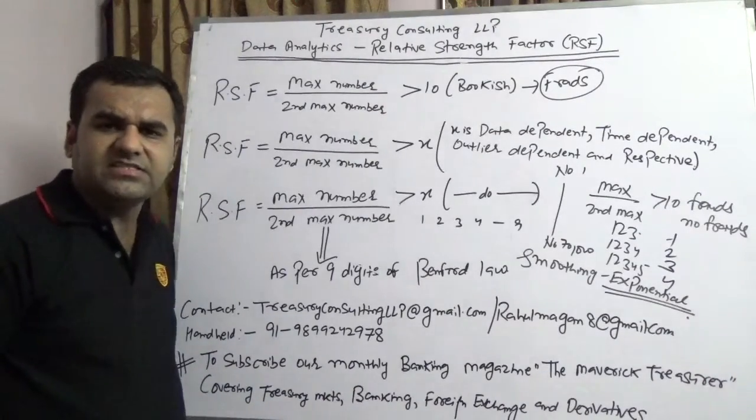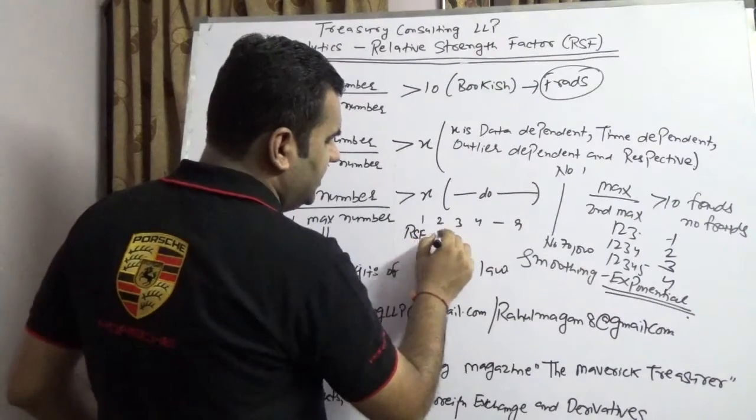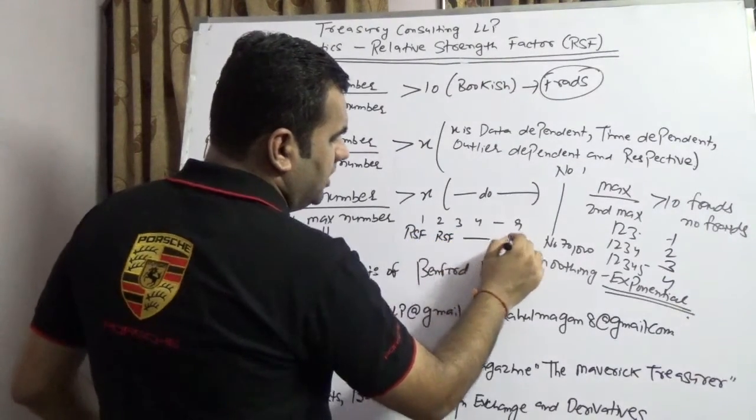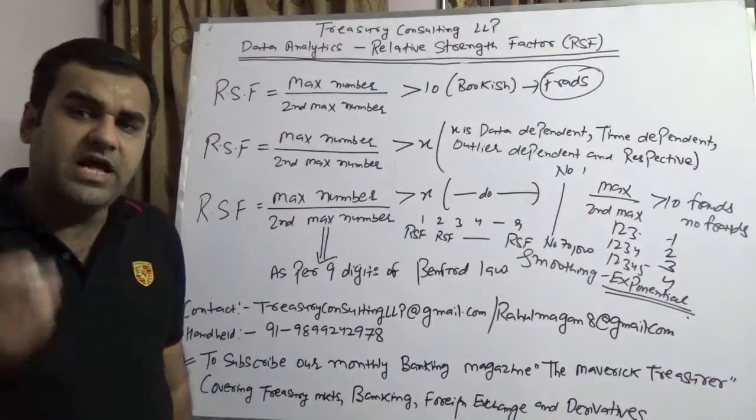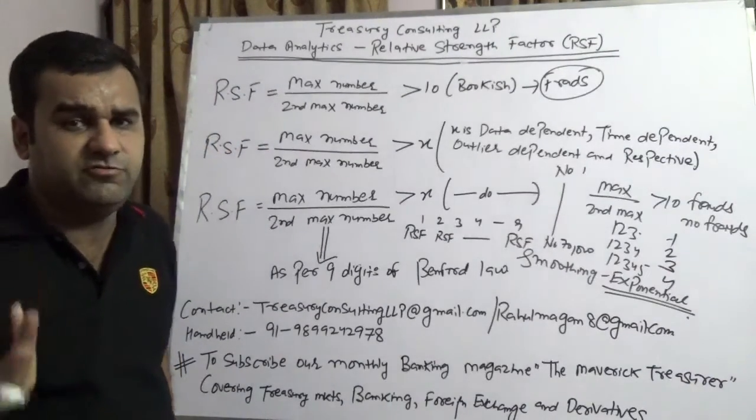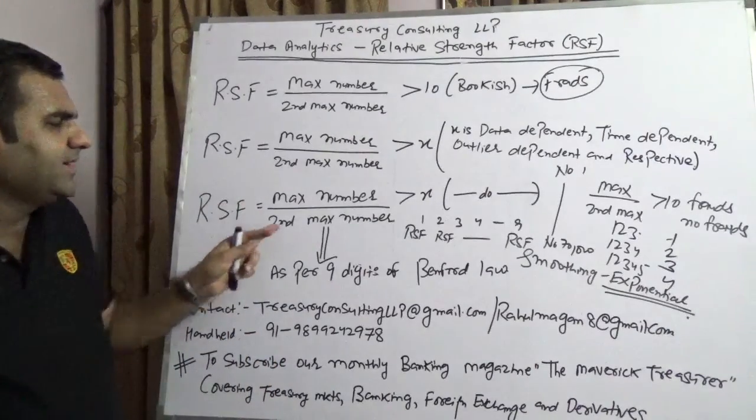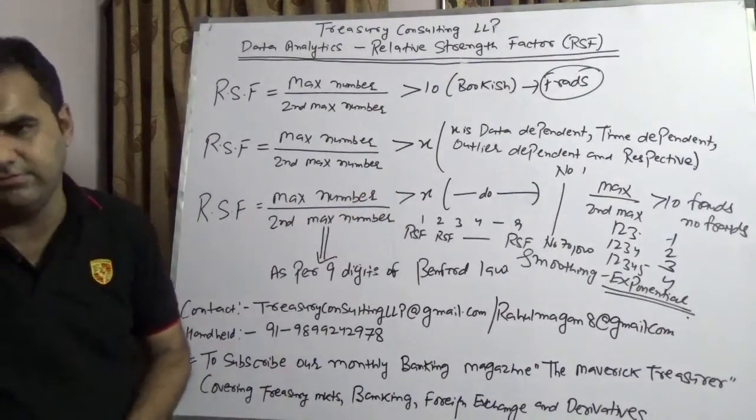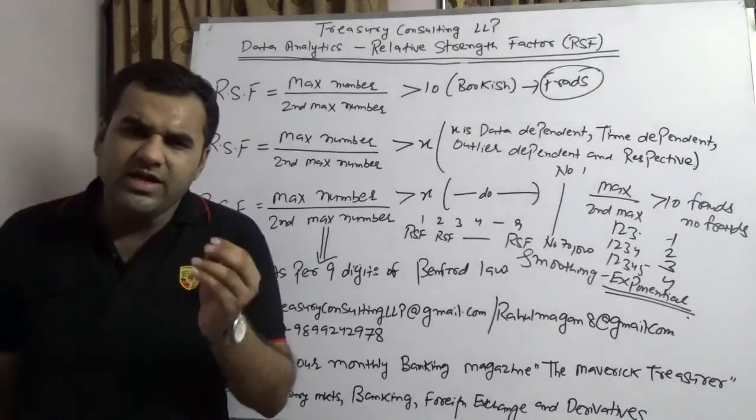And what we are going to do, we are going to take RSF digit-wise. We are going to take an individual RSF of one, individual RSF of two, and individual RSF of nine. It may be possible that nine would be a digit where RSF would fail. Example: maximum by second maximum suppose we are getting here 15, it would fail. Rest all would pass.